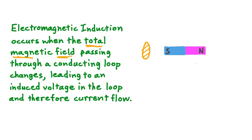One more thing to see about this idea of changing the area of the loop: we could keep the loop the same but change its area relative to the magnetic field by rotating the loop around some axis. In fact, this idea of turning a loop so as to change the area exposed to a magnetic field is behind many of the power generation systems we see. Let's talk now about generators.